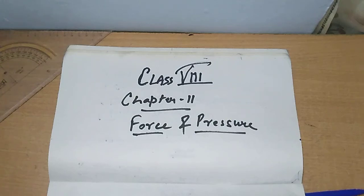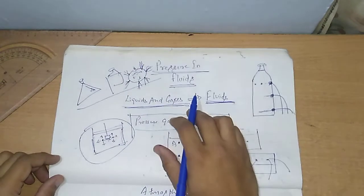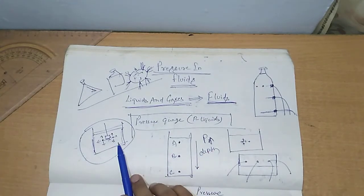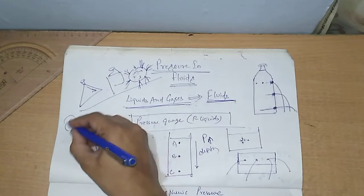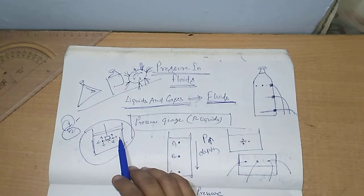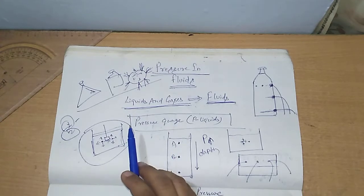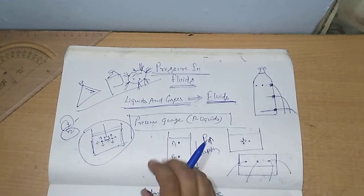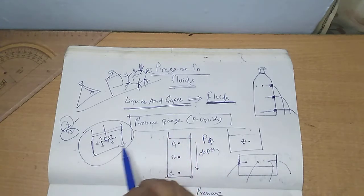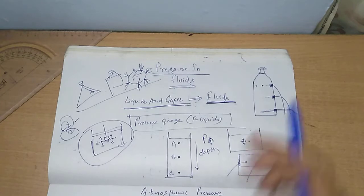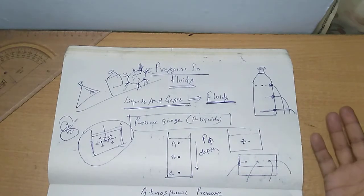Good morning students, welcome back to the YouTube channel of Venus Public School. We will be continuing with Chapter 11, Force and Pressure of Class 8. Yesterday we discussed pressure in fluids — liquids and gases. We covered two major points: number one, at every point inside a liquid, the molecule at that point exerts equal pressure in all directions with the same magnitude. Number two, pressure increases with depth.